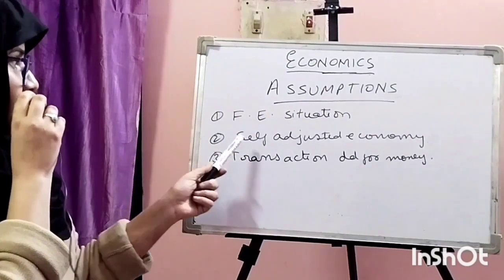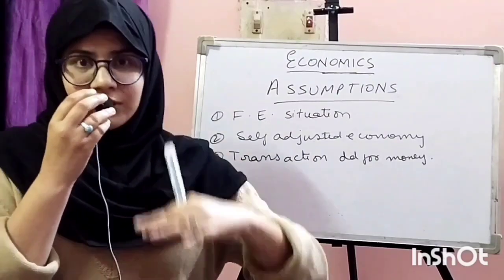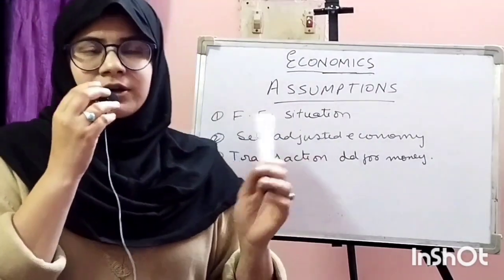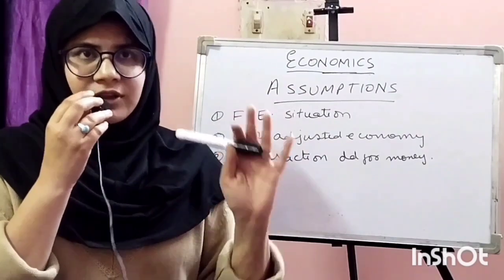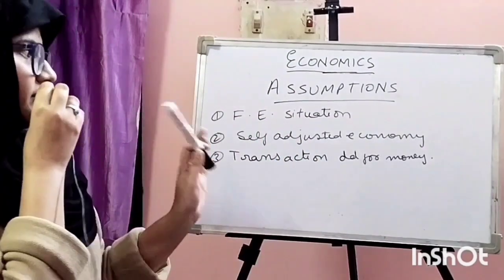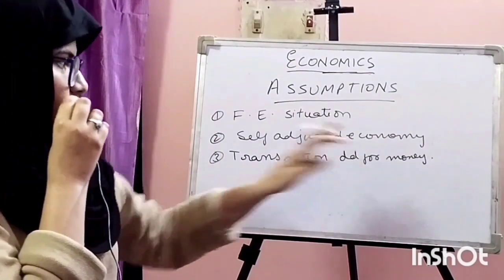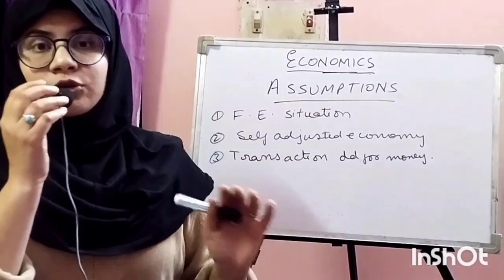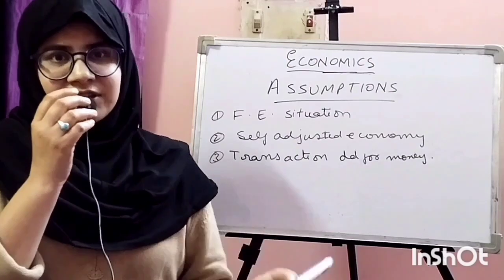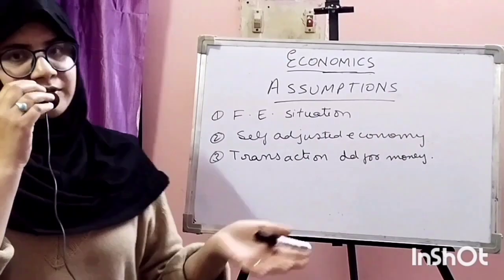The first assumption is a self-adjusted economy. Self-adjustment means the economy has an invisible hand — not this hand, but market forces like demand and supply — which can improve the economy and bring it back to the full employment situation. The next assumption is the transaction demand for money, meaning that according to classical theory, people use money only for transaction purposes in daily life.